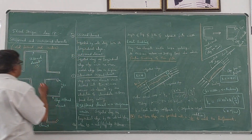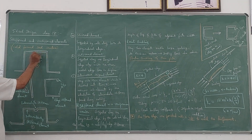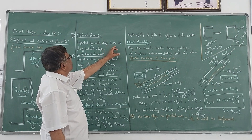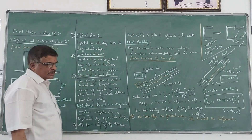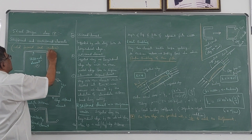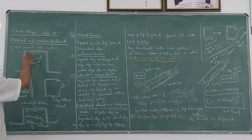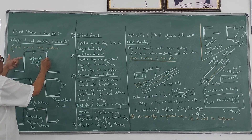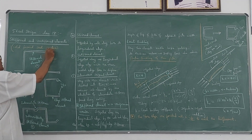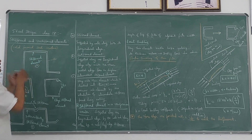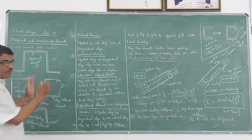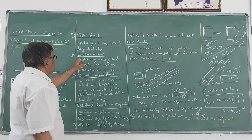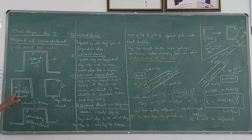The first one is the stiffened element. Why is it called a stiffened element? Because it is supported by webs along both its longitudinal edges. This is one edge and this is another edge. These two are the edges, supported by the web on both sides. That is why it is called a stiffened element — the buckling effect will not be much in such a case.